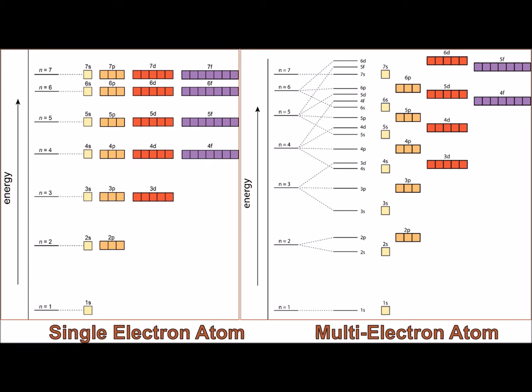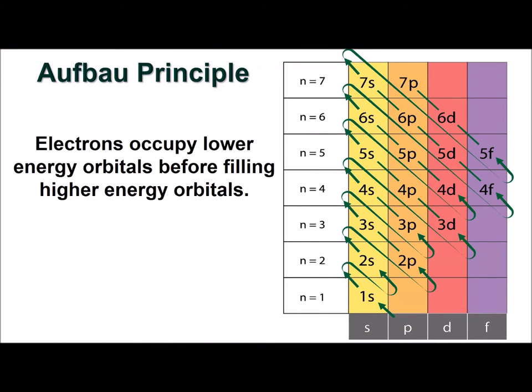We are usually interested in the lowest energy state that an atomic system can be in. This is known as its ground state. This means that we want to know about a system in which the lower energy orbitals fill before the higher energy orbitals. This idea is referred to as the Aufbau Principle, and this graphic demonstrates the order in which electrons fill orbitals in an atom, in order to achieve the ground state configuration.